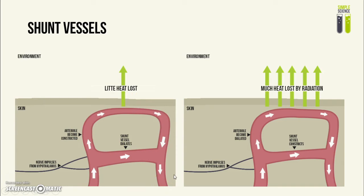Thinking about homeostasis, the reduced flow of blood to the skin capillaries not only reduces heat lost to the environment by radiation, conduction, or convection, but it also reduces blood flowing into the sweat glands — meaning you sweat little or not at all, so little or no heat is lost by evaporation of sweat.